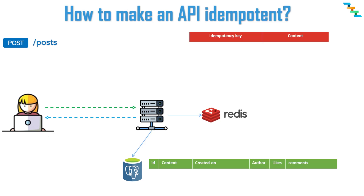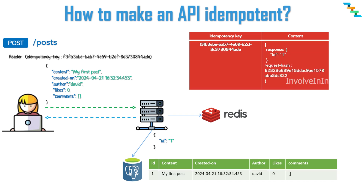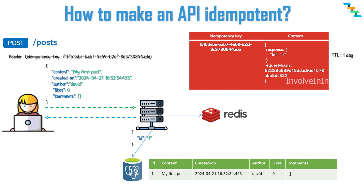Now we will see how to make an API idempotent. The client sends a POST request, and in addition to the payload, the web application generates and sends a unique UUID in the header as the idempotency key. When the server gets this request, it checks if the key is present in the cache — here we use a fast in-memory cache like Redis. If the idempotency key is not present in the Redis table, the server processes the request, adds the key to Redis with the response as the value, and optionally stores a hash of the request. You can set a time-to-live for this entry — here it is set to one day, after which the entry is automatically deleted. Then the response is sent to the client.